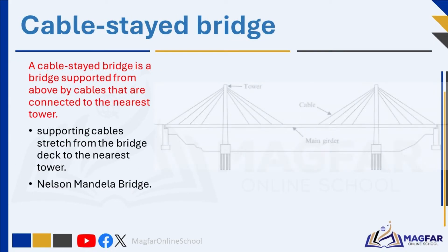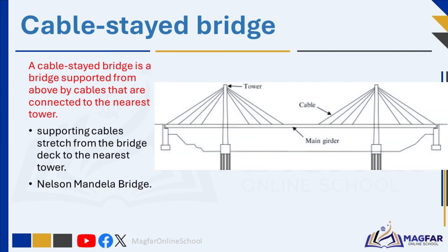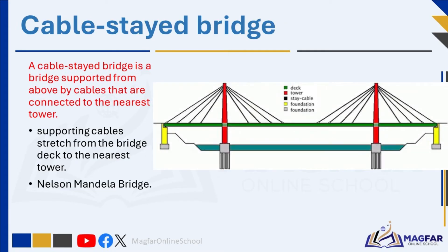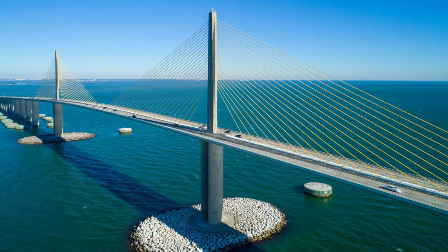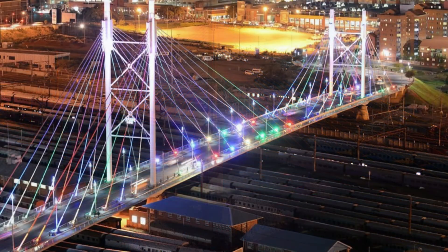An adaptation of a suspension bridge is a cable-stayed bridge. A cable-stayed bridge differs from a suspension bridge in the way cables are connected to give support. The cables that support a suspension bridge are connected to a pair of suspended cables. However, in cable-stayed bridges, each cable is connected directly to the nearest tower. The supporting cables stretch from the bridge deck to the nearest tower, and towers support the beam or deck of the bridge and bear the load. Cable-stayed bridges, however, span a shorter distance than a suspension bridge. A prominent example of a cable-stayed bridge is the Nelson Mandela Bridge.